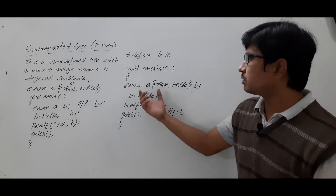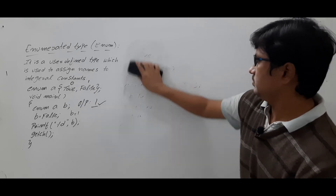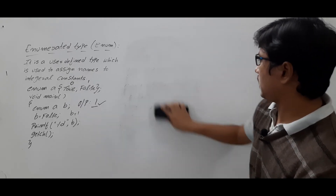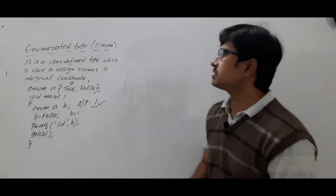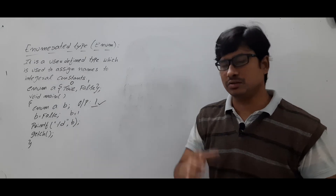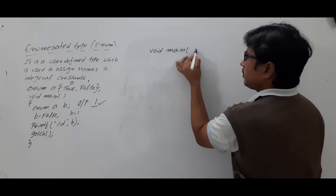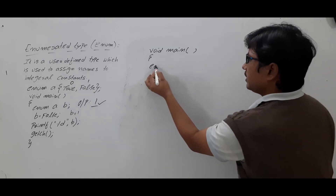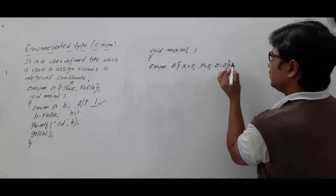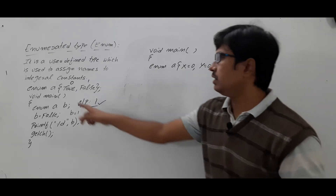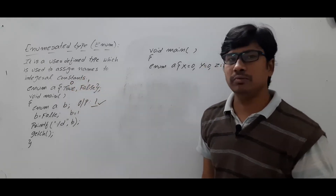Now let me discuss some interesting points related to enum. The first interesting point is that names can have the same integral constant value. For example, in void main you have enum a with x equal to 0, y equal to 0, z equal to 0. In the previous example if you did not assign any value, by default it is 0, and the next is 0 plus 1 equals 1. But here I am assigning all three names to the same integral constant 0.